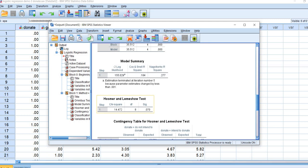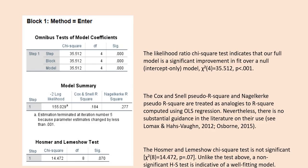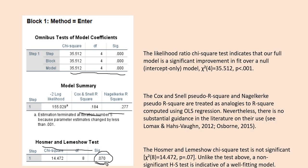Let's take a few moments to interpret what we have. First, the likelihood ratio chi-square test is statistically significant, indicating that our model containing the full set of predictors represents a significant improvement in fit over a null or intercept-only model. We also have the Cox and Snell and Nagelkerke pseudo R-square values, treated as rough analogies to the OLS R-square. The Hosmer-Lemeshow goodness of fit test, when non-significant, indicates a good model fit — and using a 0.05 threshold, our test was not statistically significant, indicating a good fitting model.